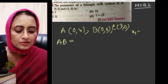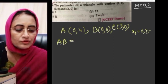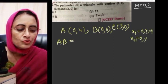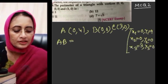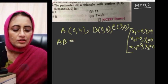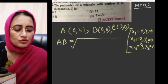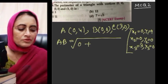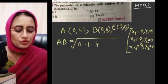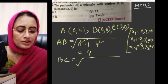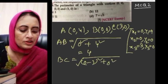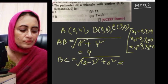x1=0, y1=4, x2=0, y2=0, x3=3, y3=0. AB equals square root of (x1 minus x2) whole square plus (y1 minus y2) whole square, that means (0 minus 0) square plus (4 minus 0) square equals 4. BC equals square root of (0 minus 3) whole square plus (0 minus 0) whole square equals 3.